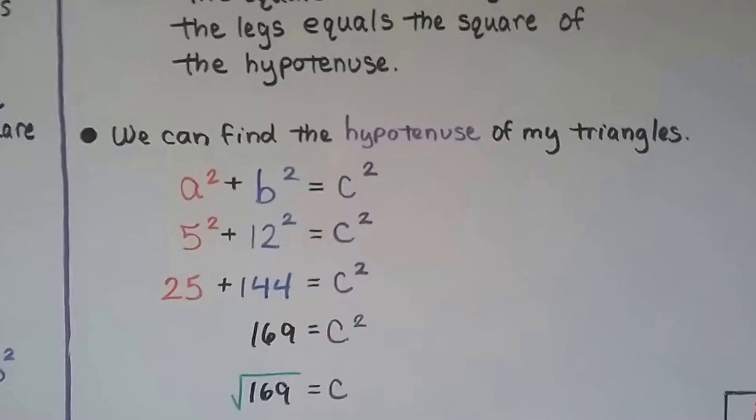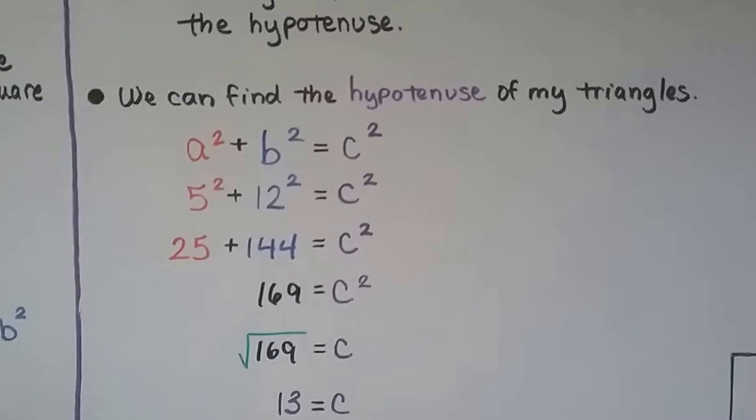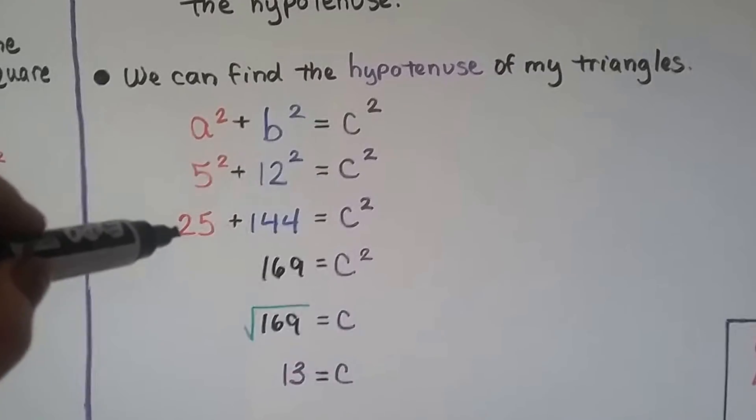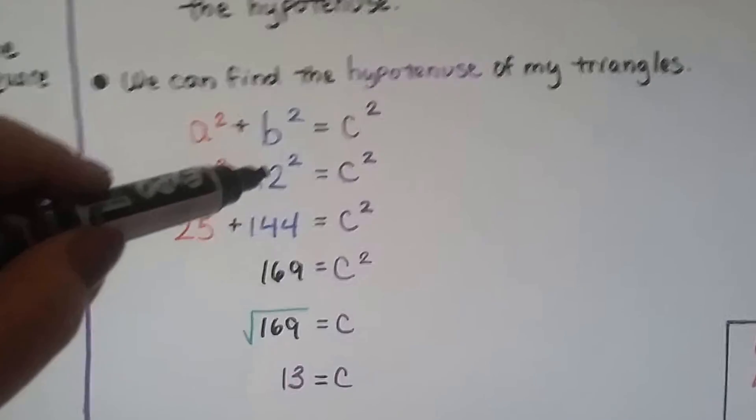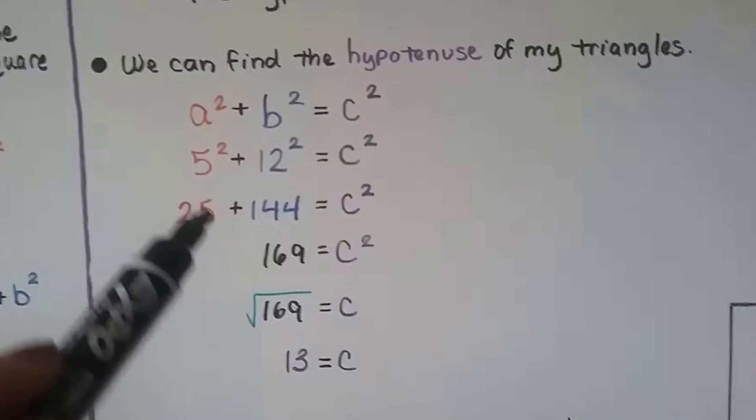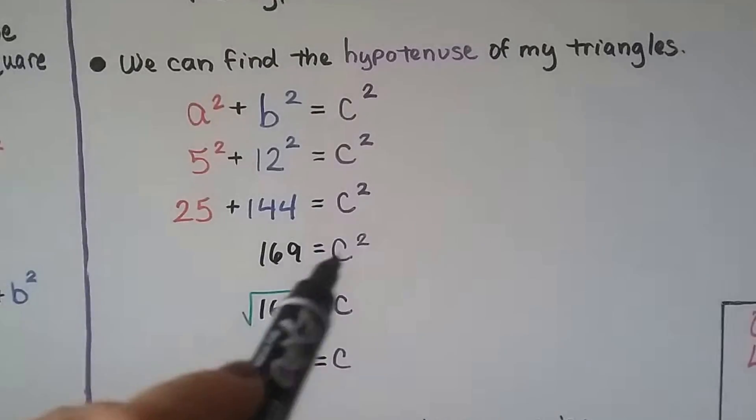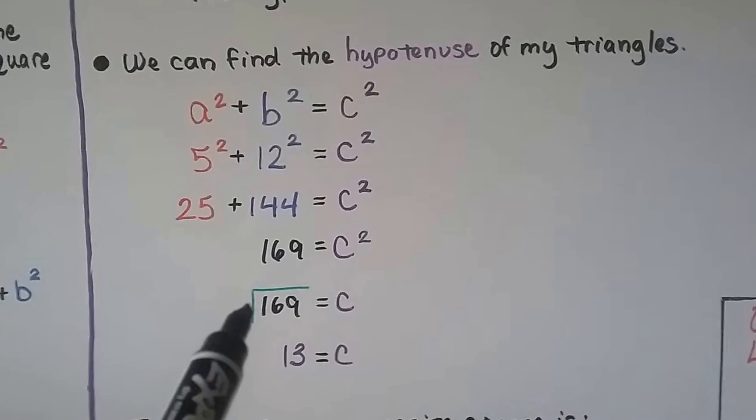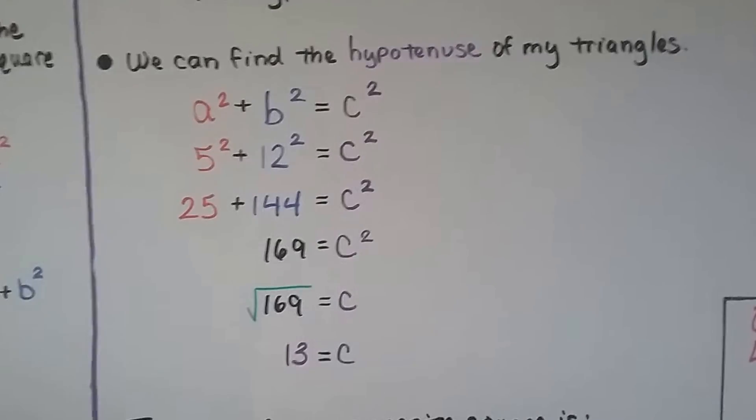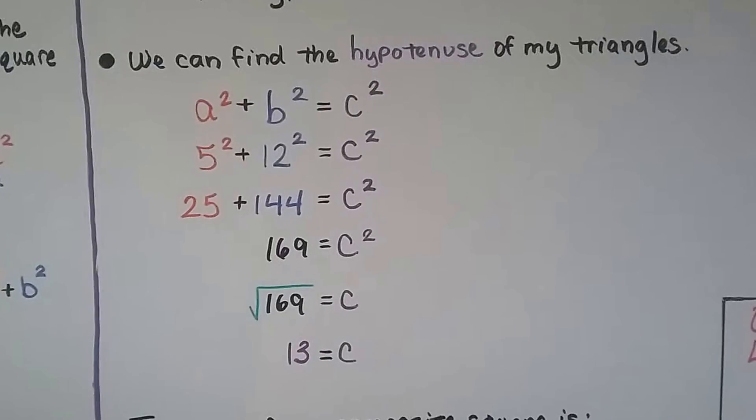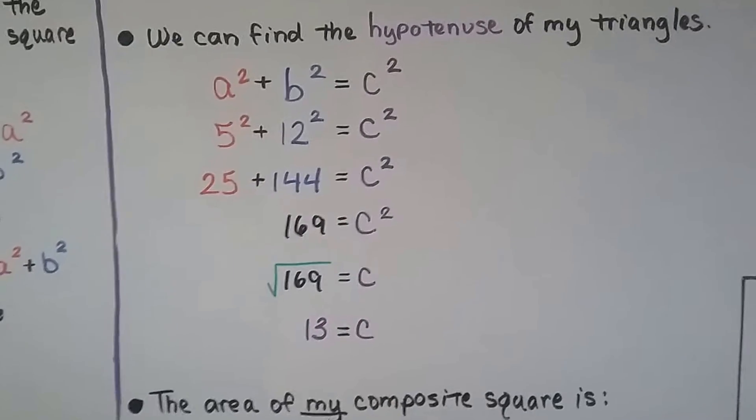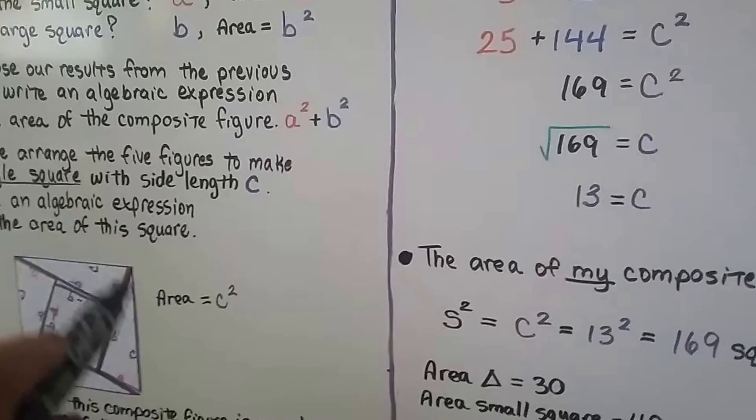And we can find the hypotenuse of my triangles. We know my a was a 5 and my b was a 12, so we could do 5 squared, that's 25, plus 12 squared, that's a 144, and we get 169 equals c squared. We take this little two exponent away by putting a radical sign around this side of the equal sign, and c is equal to the square root of 169, which is 13. So we know my hypotenuse is a 13 on my triangle, that's a 13.